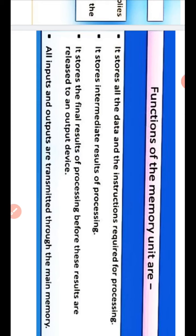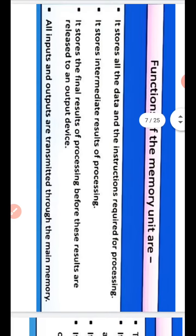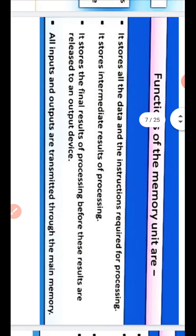Functions of Main Memory Unit: It stores all data and instructions required for processing. It stores the intermediate result of processing. It stores the final result of processing before results are released to an output device. All inputs and outputs are transmitted through the main memory.